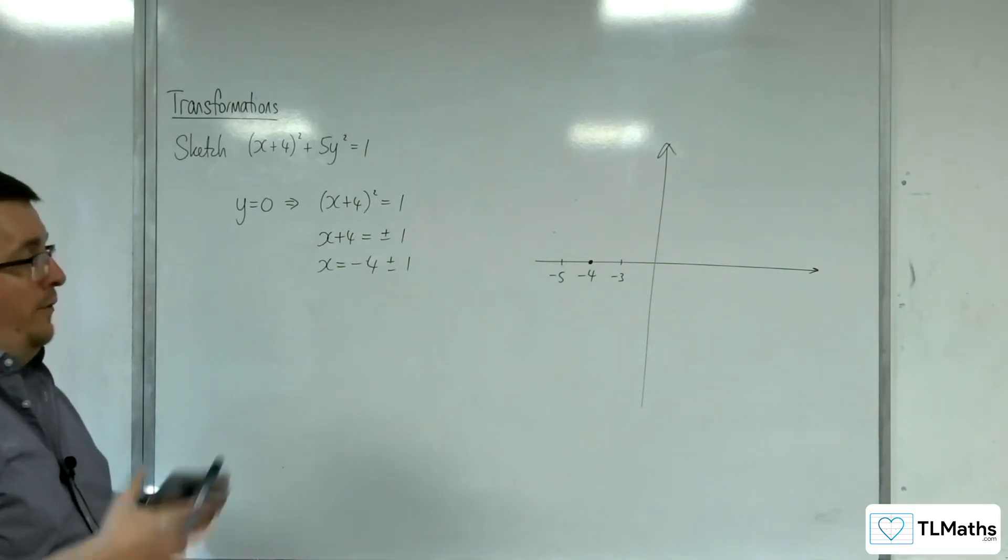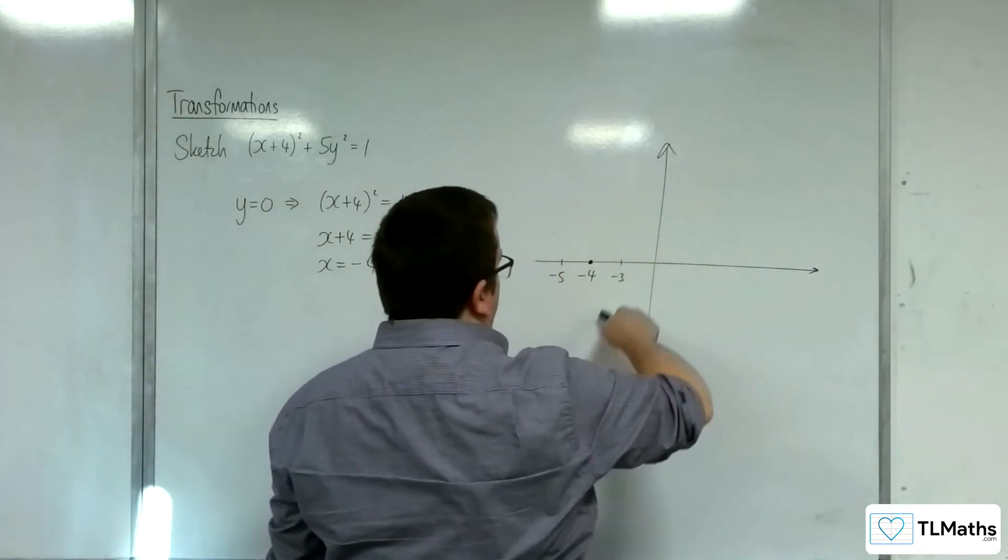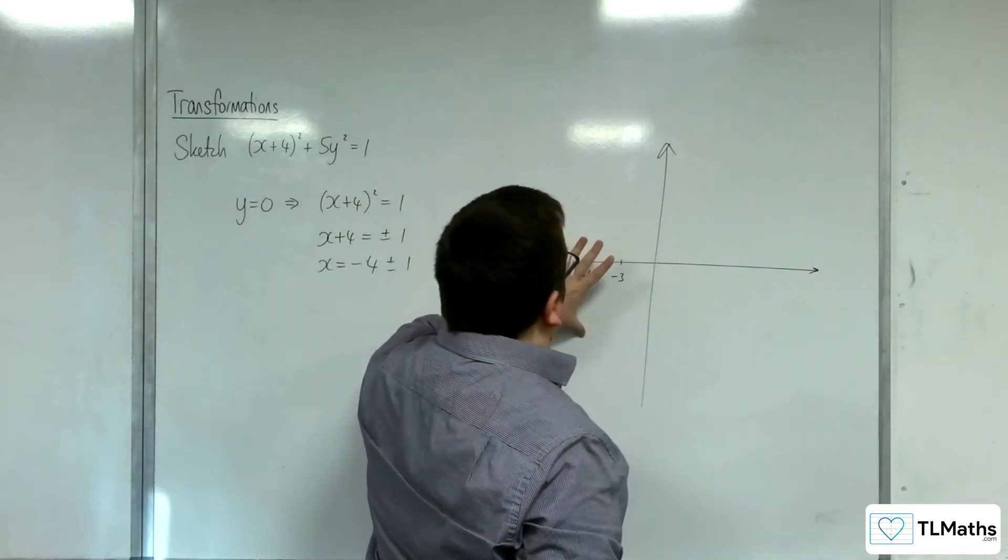Now, as for where, well, it's not going to be crossing the y-axis. Because we're going to be looking at something like this. So, we just need to find that uppermost point and the lowermost point.